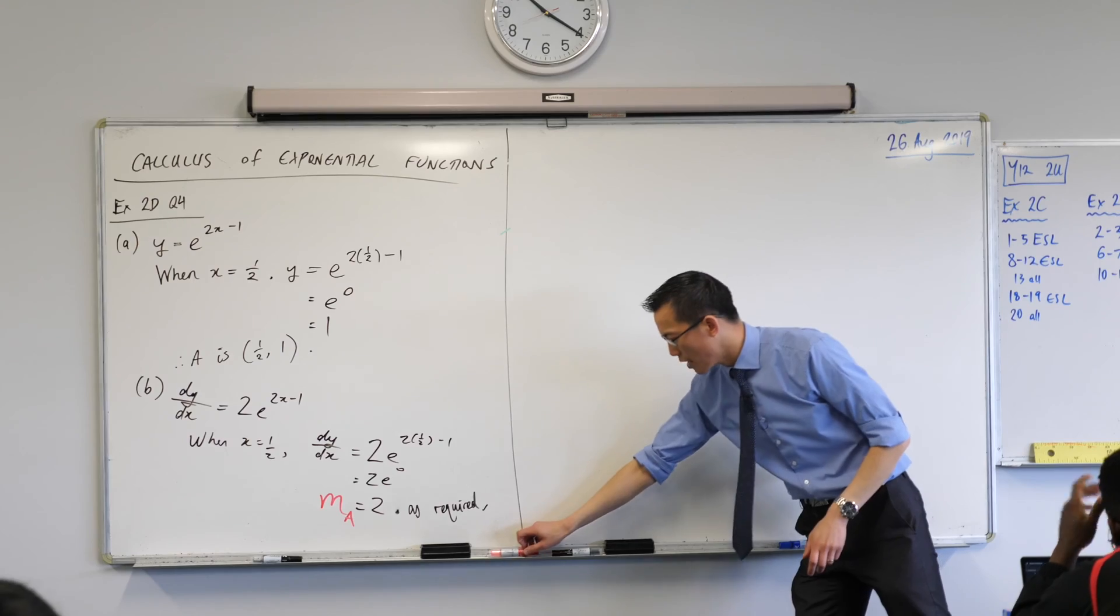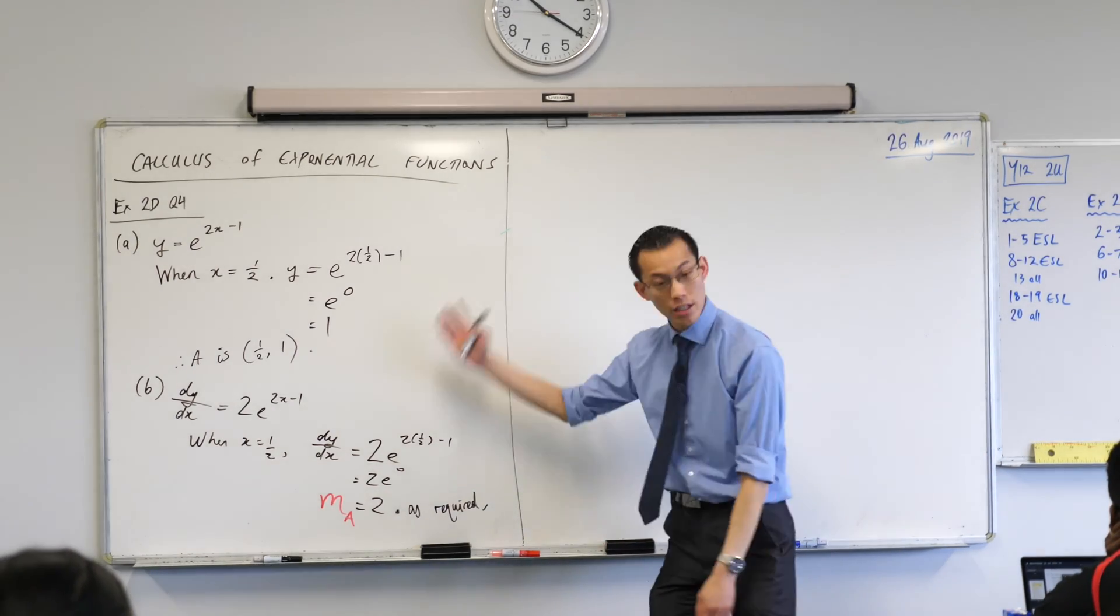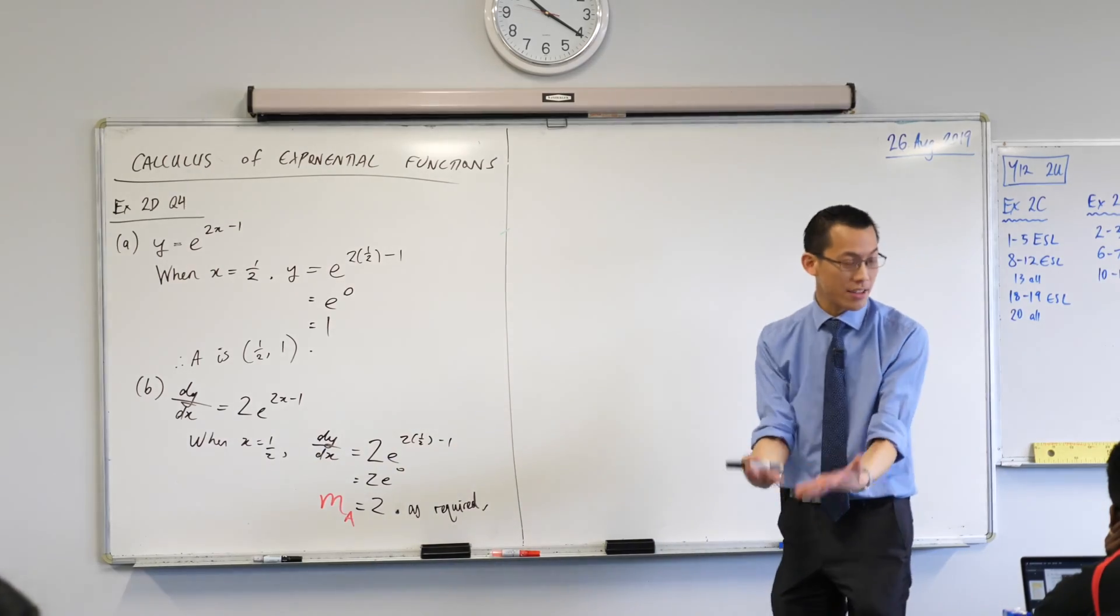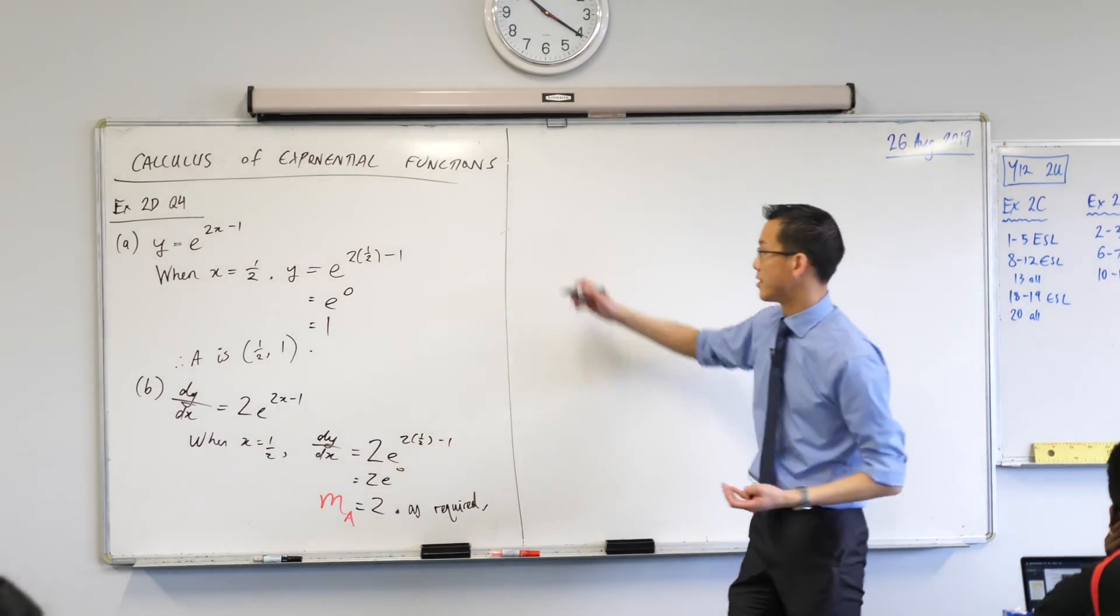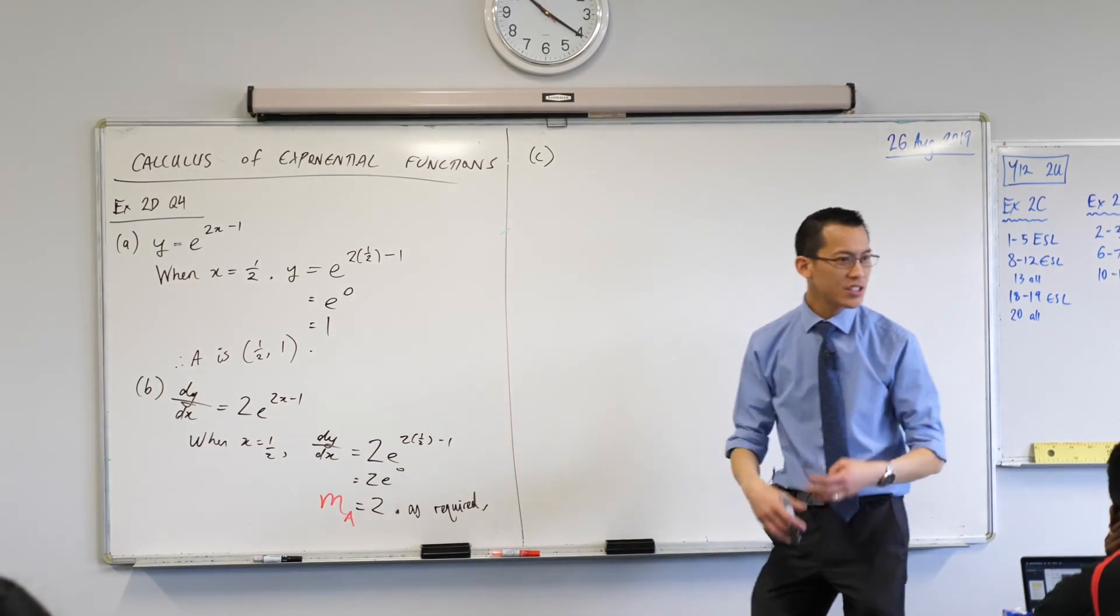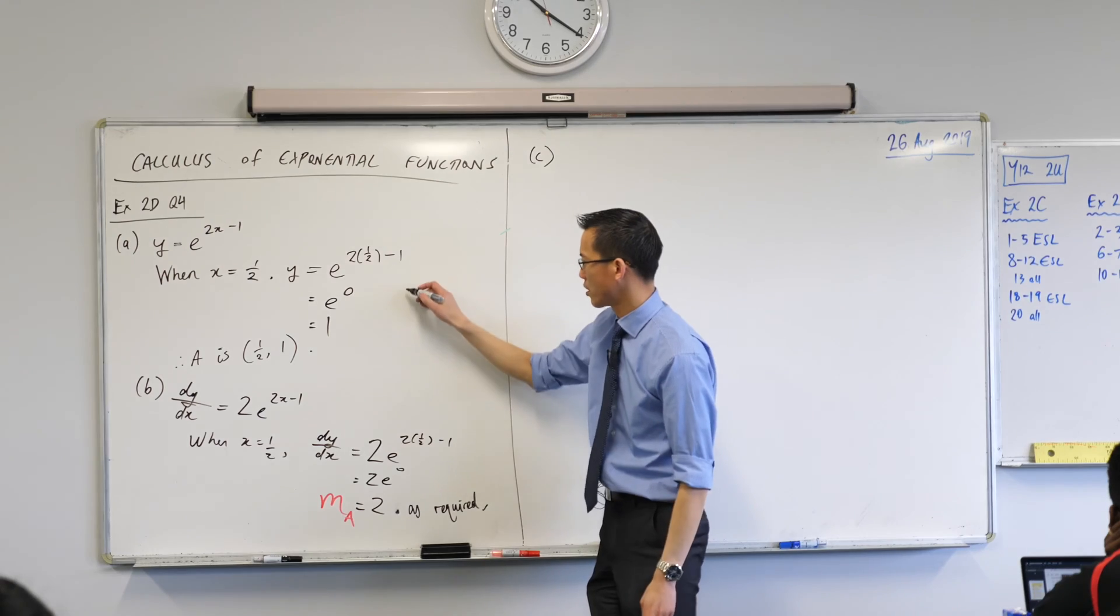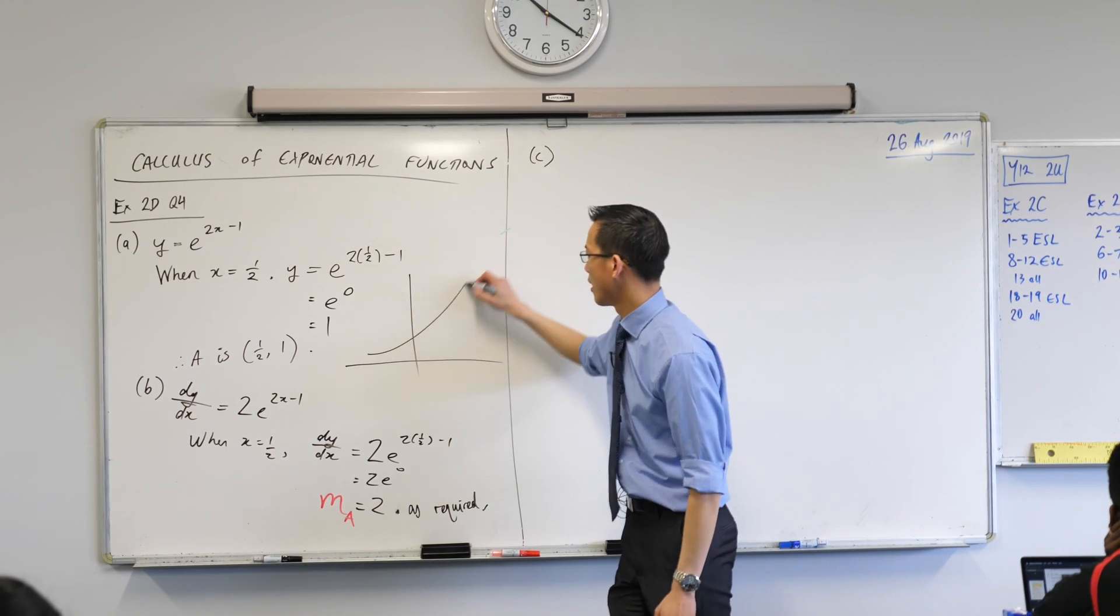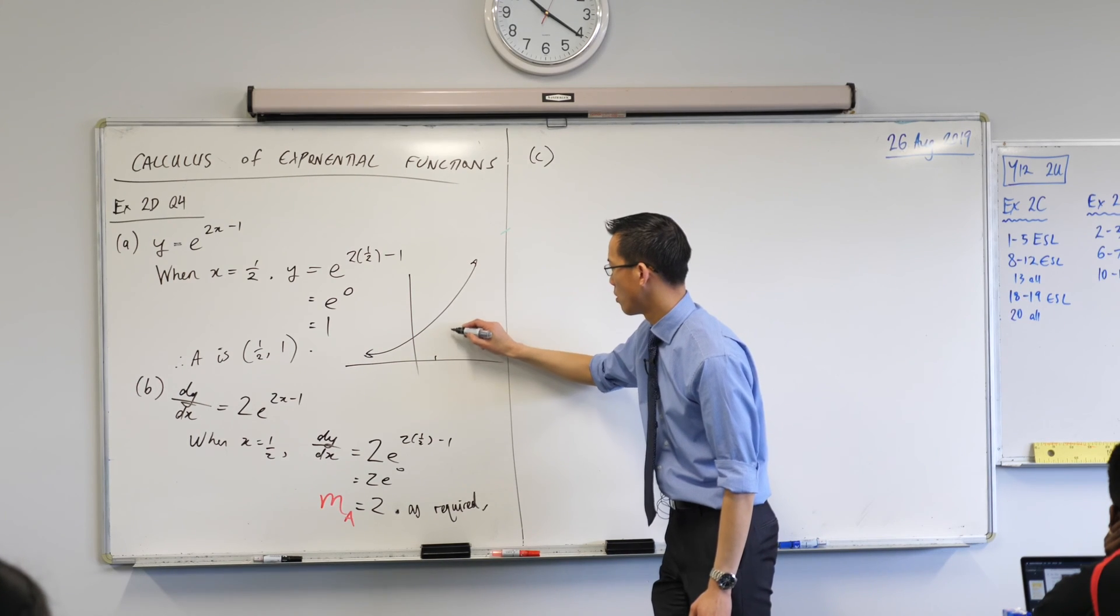All right. Part C, here's where we're going to tie this up in a bow. So this is what's called an application of differentiation. We differentiate it, and we can apply that knowledge to find, you can see in part C, the equation of a tangent. So a tangent is a straight line that just touches, right? It just touches this graph, which I'm just going to eyeball for you now. It's going to look something like this, a half comma one.